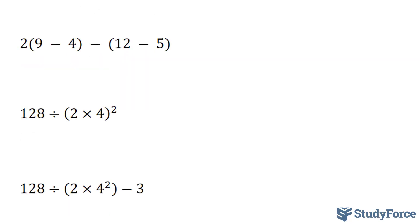In this example, we have 2, and then we have 2 sets of brackets, (9-4) and (12-5). 9 minus 4 is 5, so we have 2 bracket 5, and over here we have 12 minus 5, which is 7. Whenever you have a number beside a bracket, the operation is multiplication, but we don't show the multiplication symbol. 2 times 5 is 10, 10 minus 7 is 3.